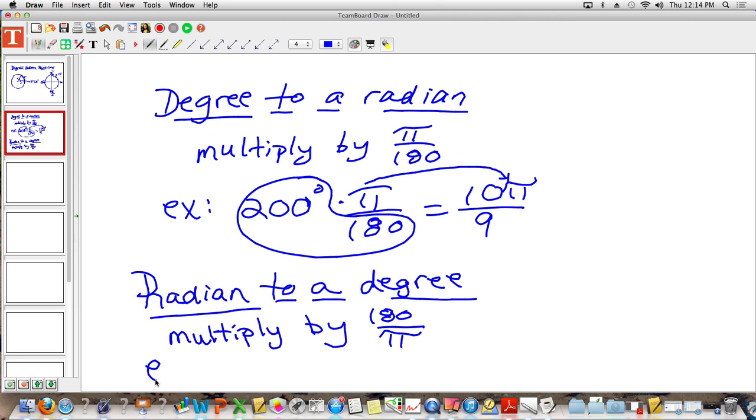So an example of that, let's try this. Let's do 11 pi over 12. 11 pi over 12. How many degrees is that? Well, you take that radian measure. By the way, how do I know this is a radian? How do I know 11 pi over 12 is a radian? It has a pi in it. It also doesn't have a degree symbol. See this 200 degrees? There's a degree symbol there. So you knew that it was degree and not radian. So you have 11 pi over 12. You multiply by 180 over pi.